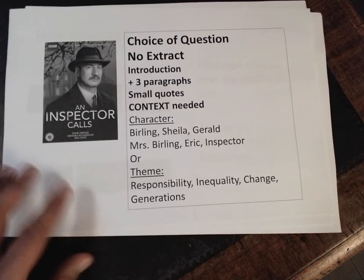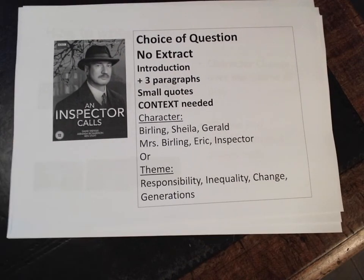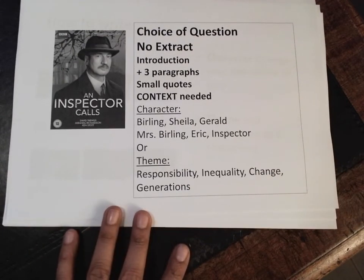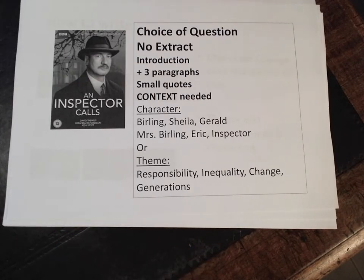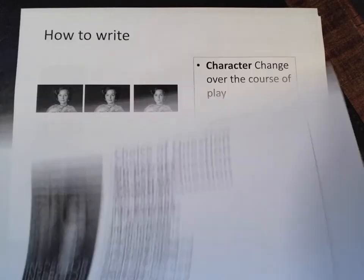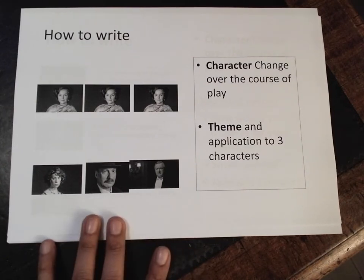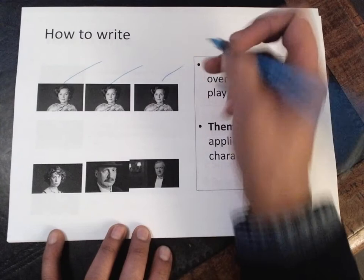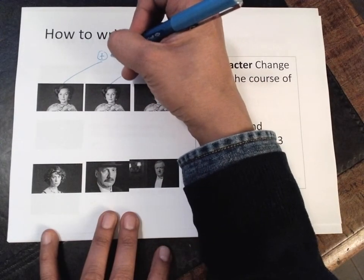Character could be Burling, Sheila, Gerald, Mrs. Burling, Eric, or the inspector — and of course the advanced one would be Eva Smith. Themes include responsibility, inequality, change, and generational conflict — just some of the major ones. There could be more themes, but if you can get back to one of these base themes it would help a lot. I used to think character was the easiest one to write about, but I think theme is actually the one where you can do more. Generally, with character you're thinking about three moments for the character, but also what I'd want you to think about is character relationships — you can't just write about a character in isolation.